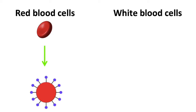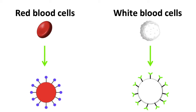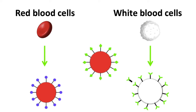White blood cells are also known as leukocytes. They fight infections to help us keep healthy. When you get sick, it's the production of white blood cells that help you fight the cause of your sickness. If the white blood cells identify any antigens on cells that aren't recognised as being the body's cells, then the white blood cells will produce antibodies. These antibodies attach to the foreign cells and will destroy them.